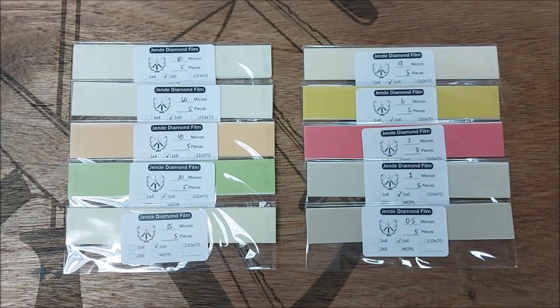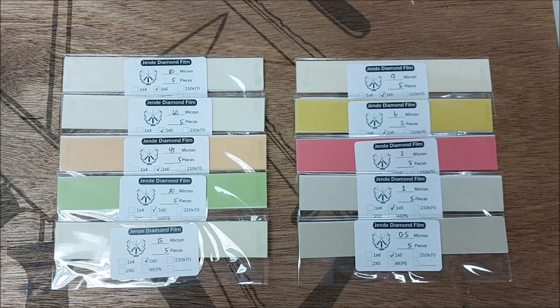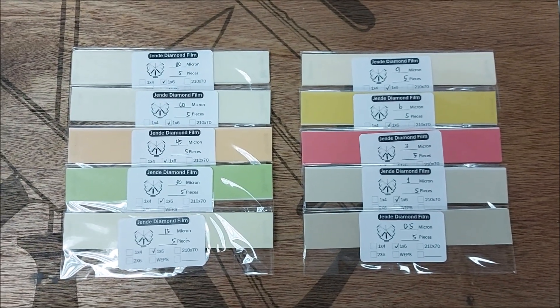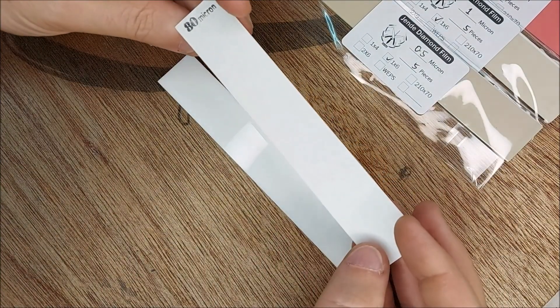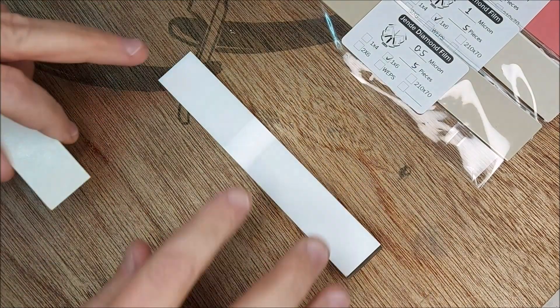So we're going to mount these to our acrylic blanks and put the knife in the JIGS and get ready to go. To put on the film, this is 80 micron here. Here's your blank. Blanks are acrylic, so they're flat. Just make sure they're clean and free of dust.